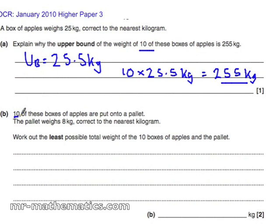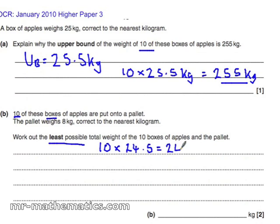Now we're going to look at the least weight. We'll use the same idea but this time find the lower bound. So it's 10 multiplied by 24.5 — any lower and it would be rounded to 24 kilograms, not 25. That comes out as 245 kilograms.